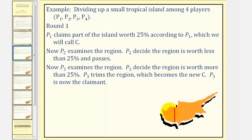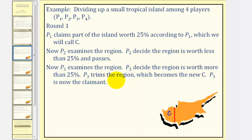So this is C to begin with. Player two examines the region and decides it is worth less than twenty-five percent, so player two passes. It goes to player three, who examines the region and decides it is worth more than twenty-five percent. So player three trims the region, which becomes the new C, and player three is now the claimant.